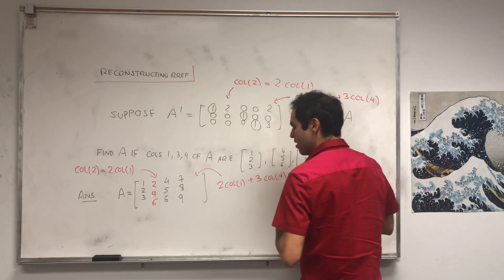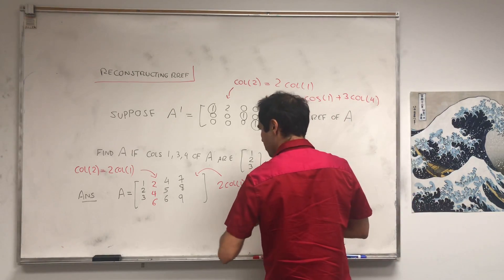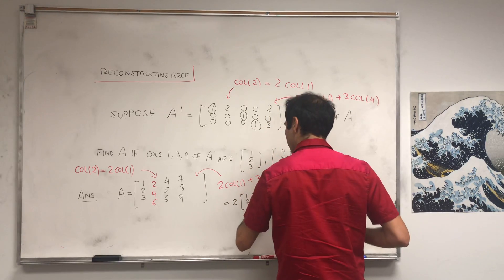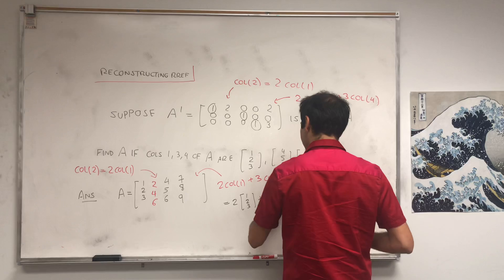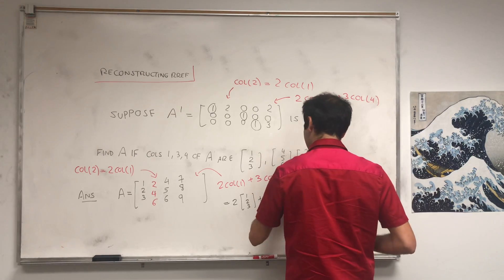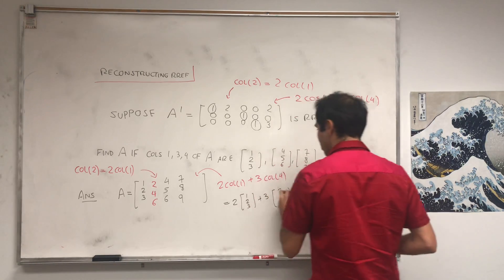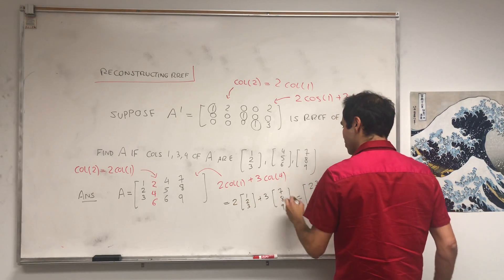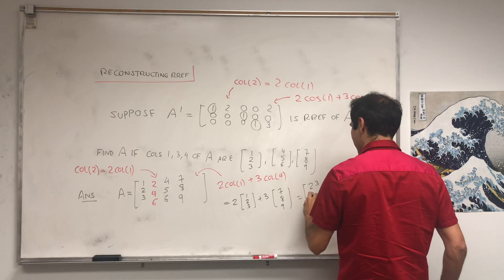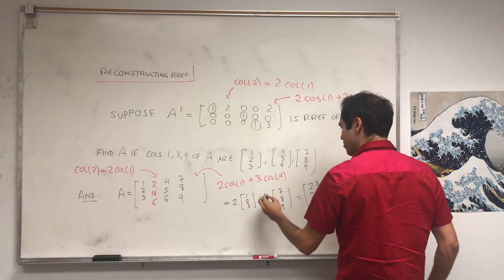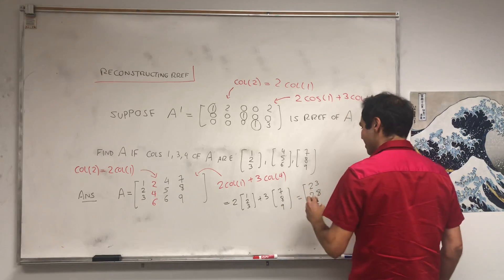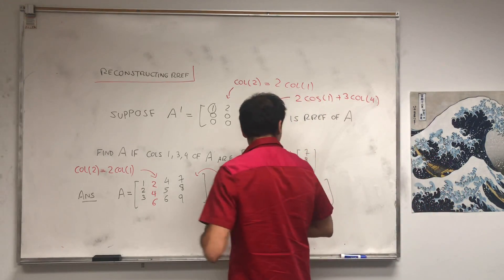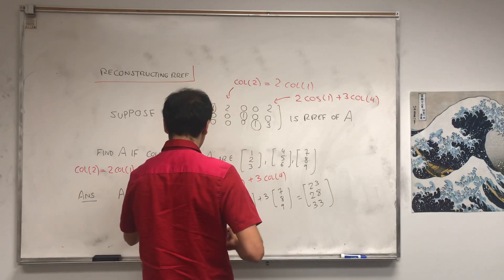Which here becomes two times [1, 2, 3] plus three times [7, 8, 9]. And let's see, so 21 plus 2 is 23, now 4 plus 24, that's 28, and then 6 plus 27, that's 33. So this column will be [23, 28, 33].